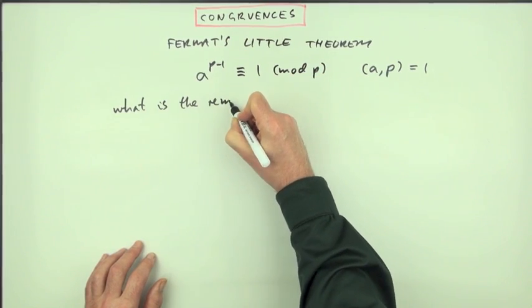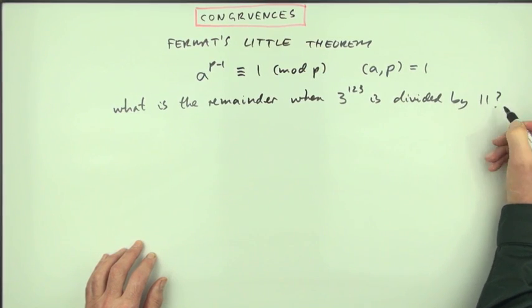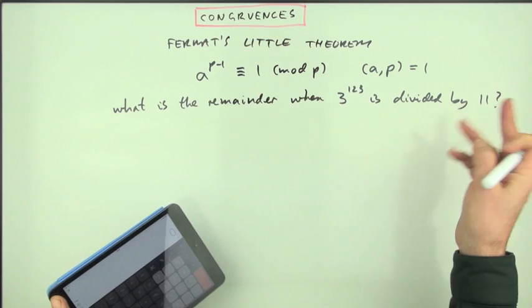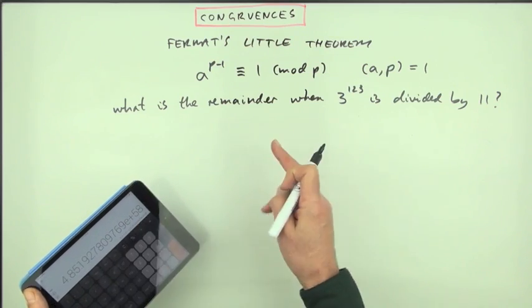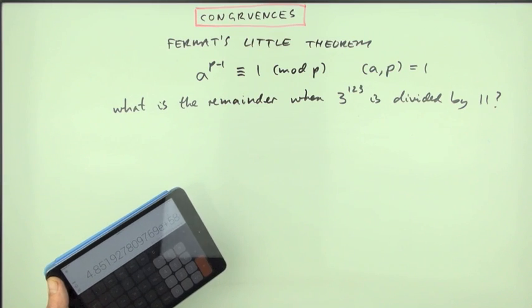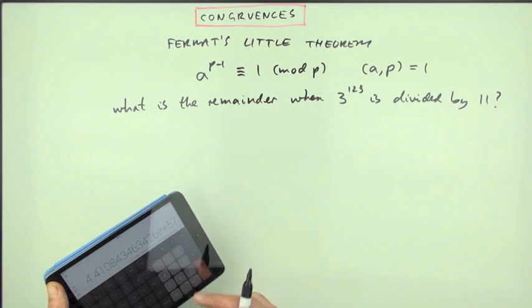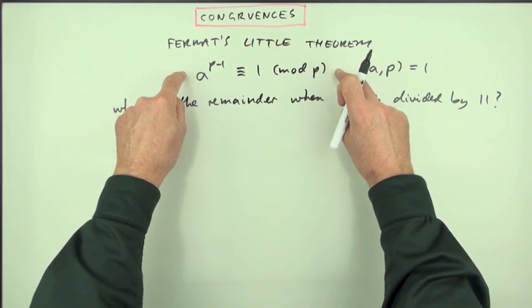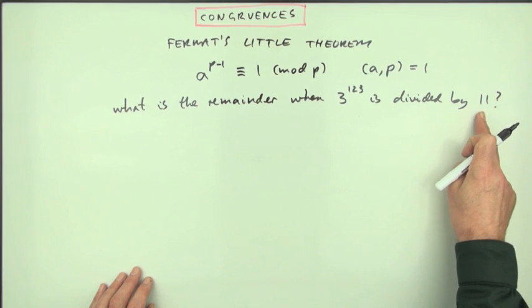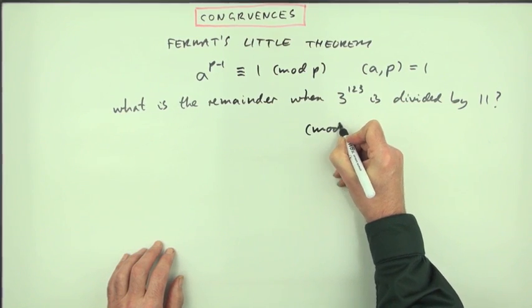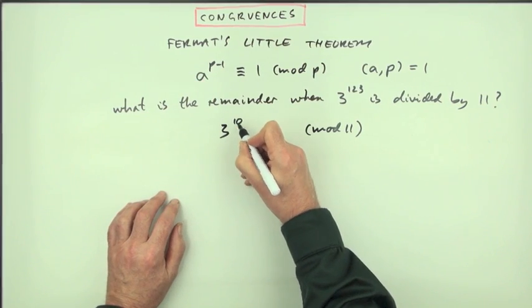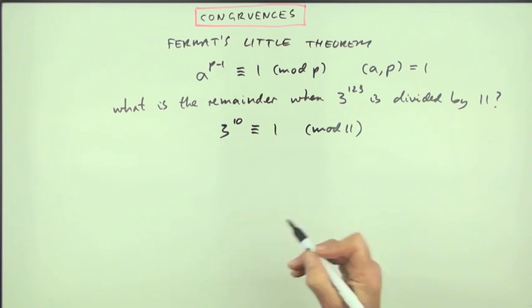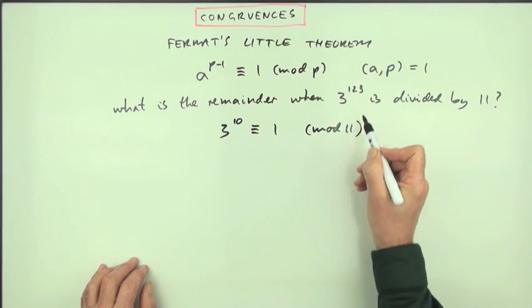As an example, what's the remainder when 3 to the power of 123 is divided by 11? No problem, I'll just type that in and see what the remainder is. 3 to the power of 123 is... whoops, gubbed. Far too many digits here to fit on it, so I've no idea what they are at the end, so I can't actually divide that by 11. That's where Fermat's little theorem is going to come in handy. If I'm dividing by 11, which is a prime number, and 3 is co-prime, that means 3 to the 10 should be congruent to 1.